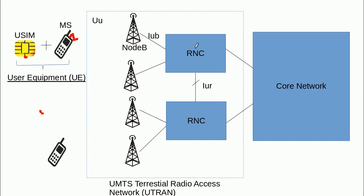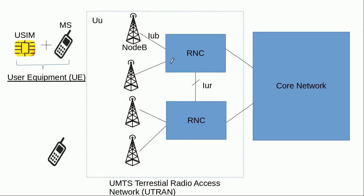A Radio Network Controller (RNC) can control one or more Node Bs. The intelligence of the access network resides in the Radio Network Controller. The RNC manages and controls the Node Bs connected to it. This access network, which consists of the Radio Network Controllers and Node Bs, is known as the UMTS Terrestrial Radio Access Network, abbreviated as UTRAN.